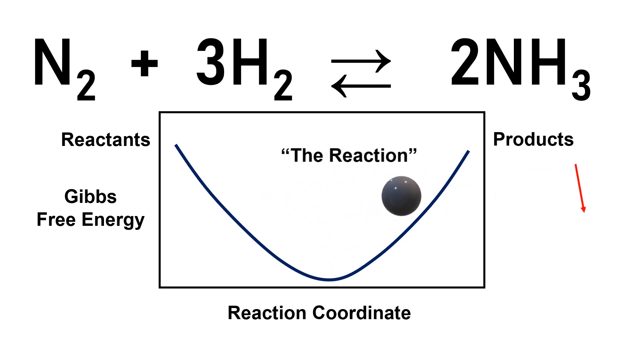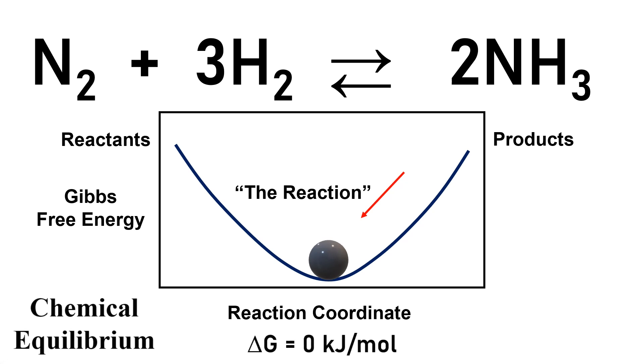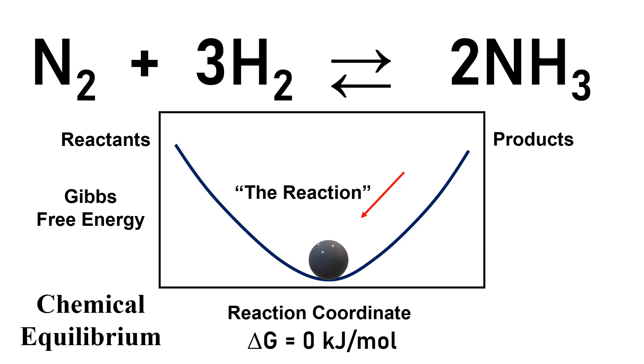Similarly, the ball or the reaction closer to the product's side will spontaneously roll down to the same minimum free energy. In both cases, the change in the free energy is negative. Then the ball stops at the minimum free energy, and the change is then zero. This is chemical equilibrium, where the change in free energy is zero.